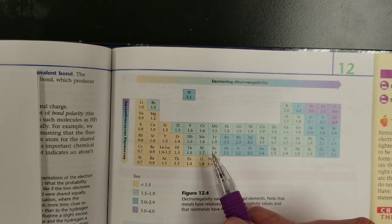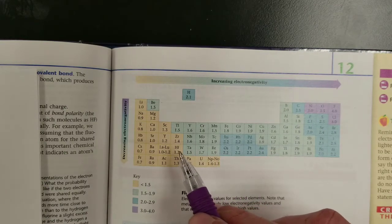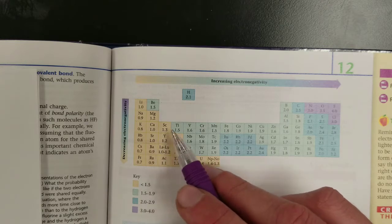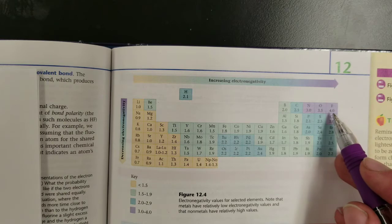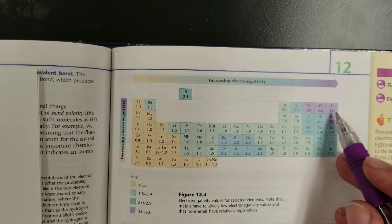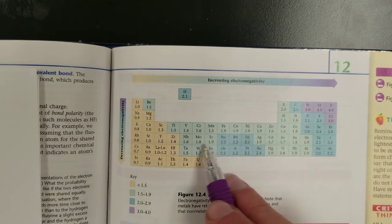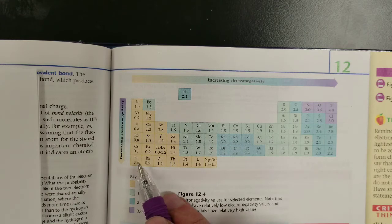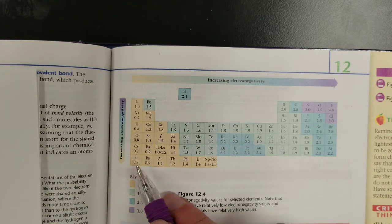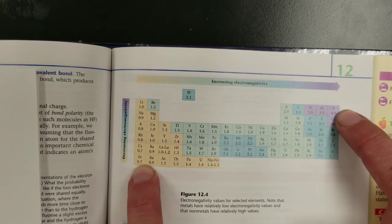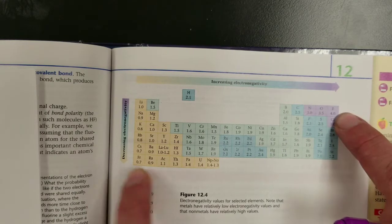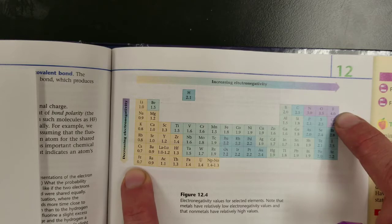This electronegativity is a reflection or measurement of how strongly an atom attracts an electron. If it has a high electronegativity, such as fluorine, it very strongly attracts electrons. As opposed to francium, with very low electronegativity, has a very weak attraction for electrons. If you pair up a very strong and a very weakly negative atom, this one's going to steal the electrons away from this one, and it's going to be ionic.